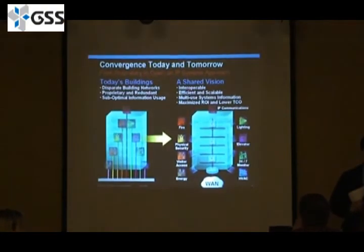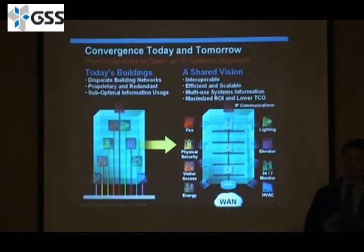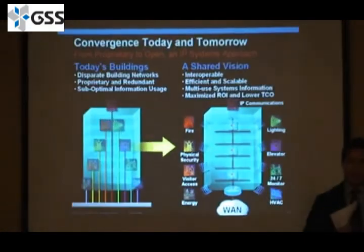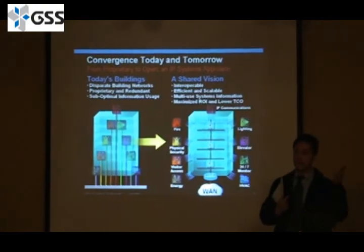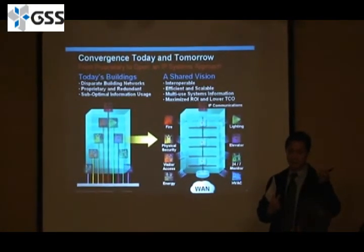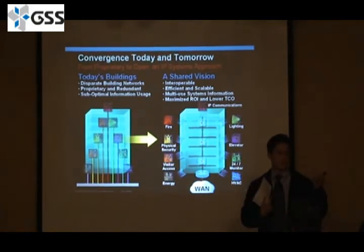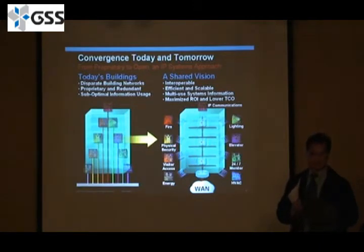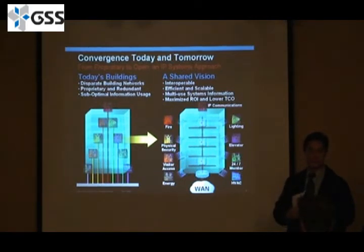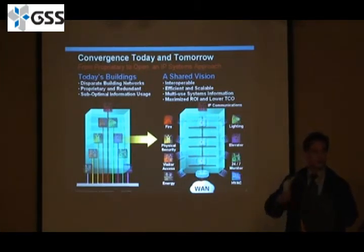If they need to respond to an incident, it allows them to get an accurate view via video-related systems. As a first responder, I can get a real-time picture of what's going on through my IP phone or cell phone. Most people are carrying a 3G-enabled mobile device now. I can turn on my cell phone, get a real-time feed through the 3G network, and see if there's a fire hotspot or a burglary in progress — so I can prepare as I'm going into the situation.